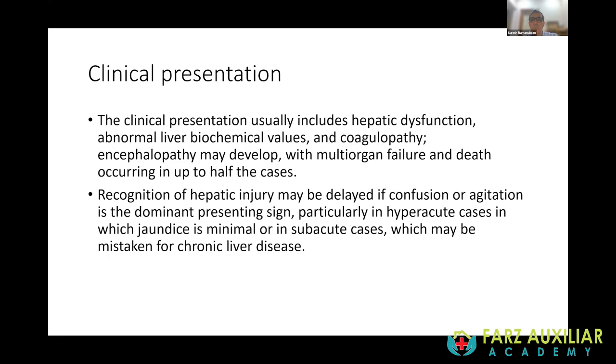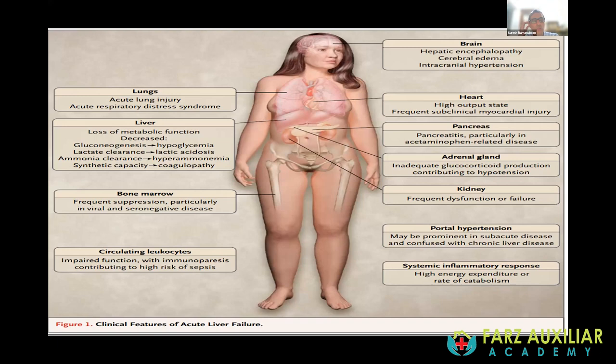Acute liver failure, like any organ failure, can produce manifestations in every organ, making it one of the differentials of multi-organ failure. Because the liver is gone, you have loss of metabolic function: decreased gluconeogenesis manifesting as hypoglycemia, poor lactate clearance manifesting as lactic acidosis, poor ammonia clearance manifesting as hyperammonemia, and decreased synthetic capacity leading to coagulopathy.